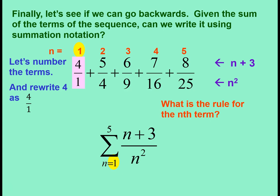Now notice where the different terms go in our summation notation. Notice n equals 1 is the first term number, n equals 5 is the last term number. n plus 3 is the pattern we notice in the numerator, n squared is the pattern we notice in the denominator.